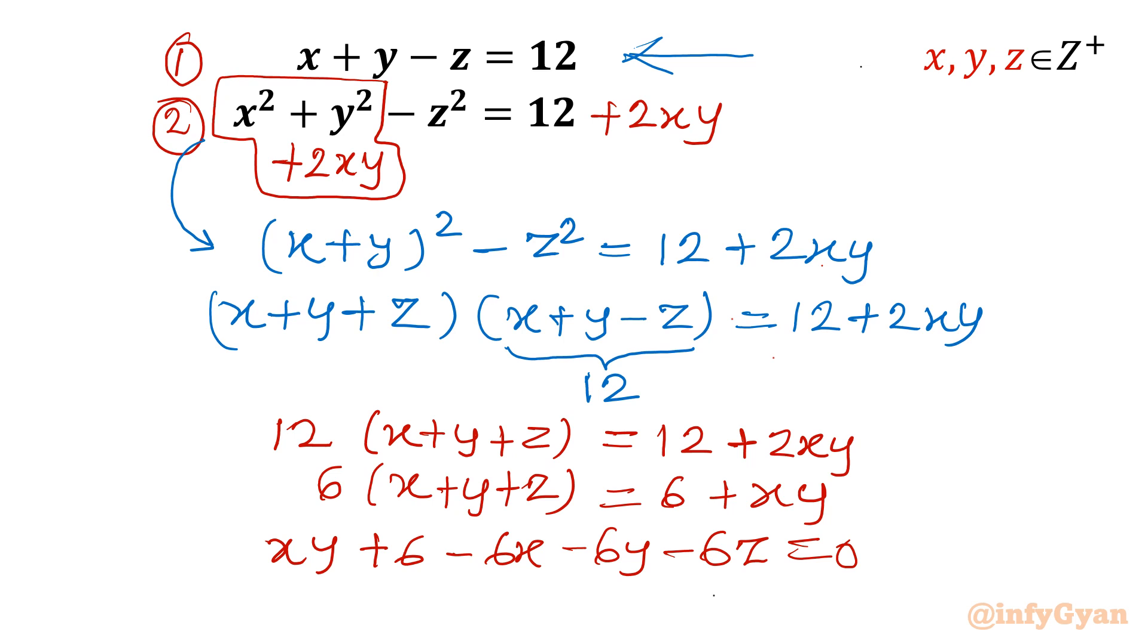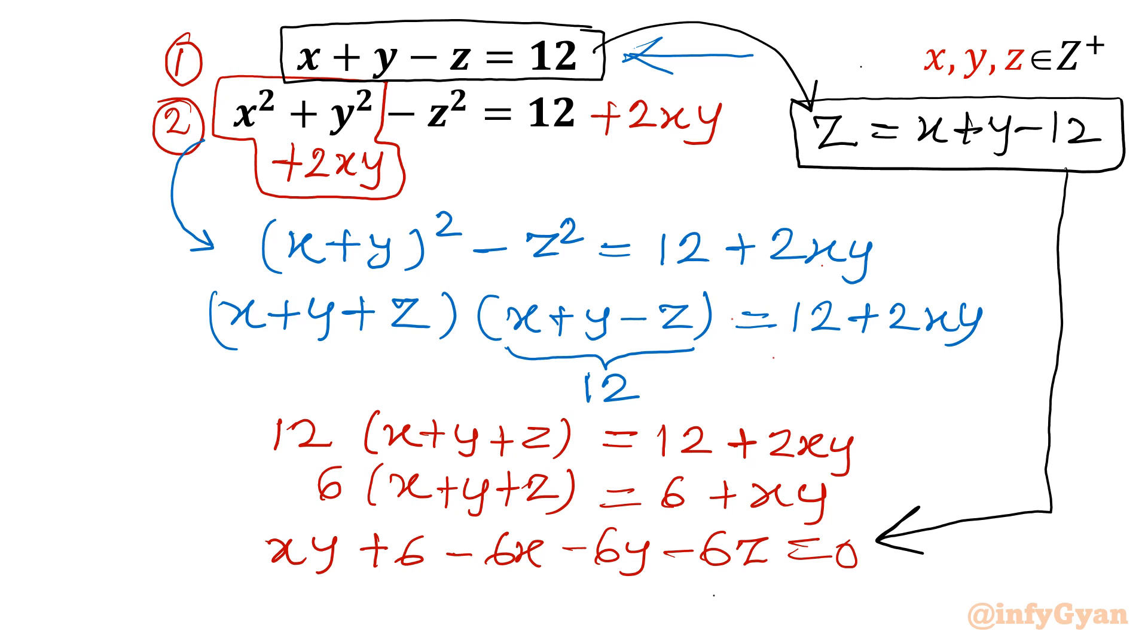Now I will use equation 1. Equation 1 is x plus y minus z equal to 12. So from here if I write the value of z, z I can write as x plus y minus 12, and this value I will put here in this equation. Here it is minus 6z.